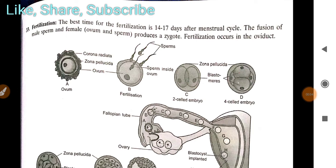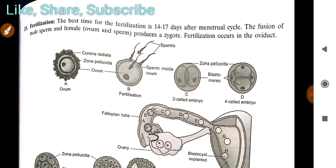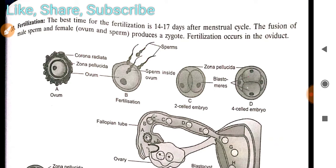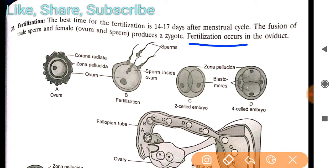Last week we studied up to the menstrual cycle and the male and female reproductive organs. Today we will discuss the process of fertilization. The best time for fertilization is 14 to 17 days after the menstrual cycle. The fusion of male sperm and female ovum produces a zygote. Fertilization occurs in the oviduct.